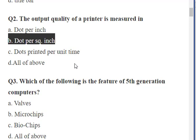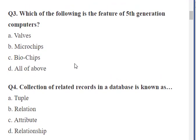The third question: 'Which of the following is the feature of fifth generation computers?' with options: valves, micro chips, bio chips, and all of the above. The answer is bio chips. Valves were used in first generation computers, microchips are used in the current generation, and bio chips — genetically engineered protein molecules — are expected as fifth generation processing devices. So 'all of above' is not the right answer; bio chips is correct.